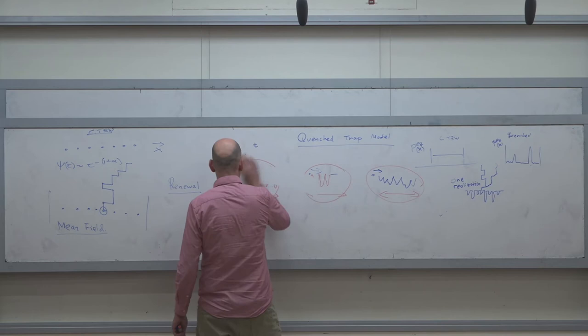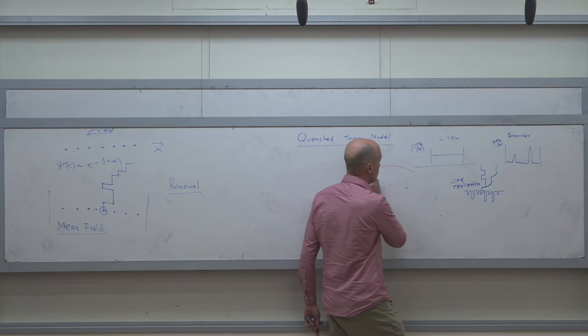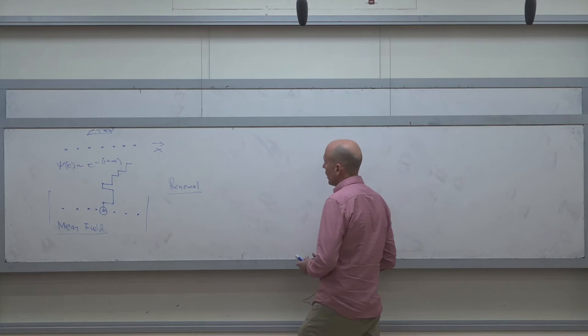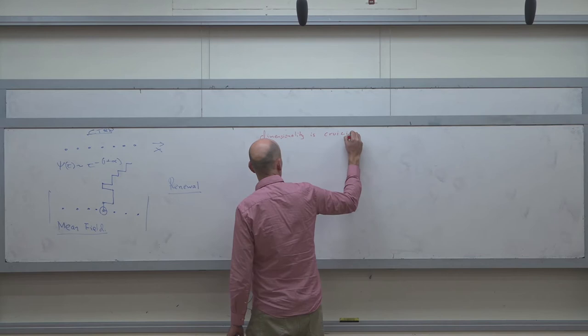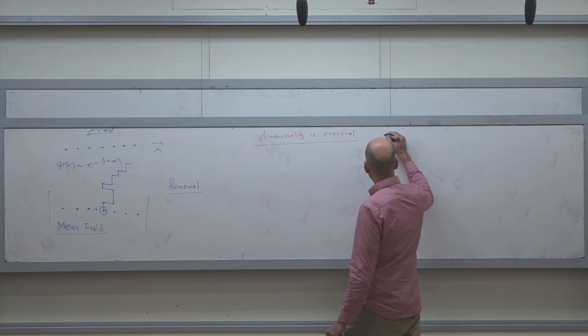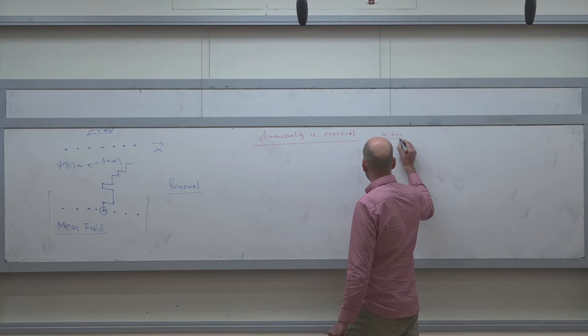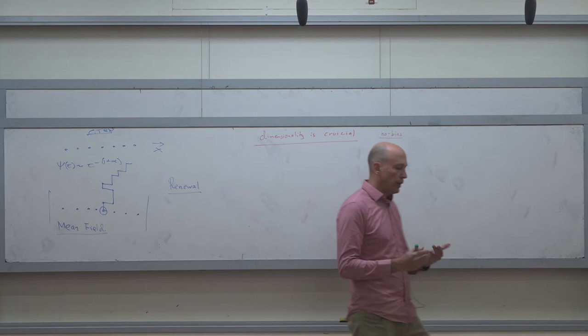Now I want to mention a fundamental difference between the models that depends on dimensionality. Dimensionality is crucial, especially in the case with no bias. With bias, the dimensionality stops being important, and we will soon understand why.